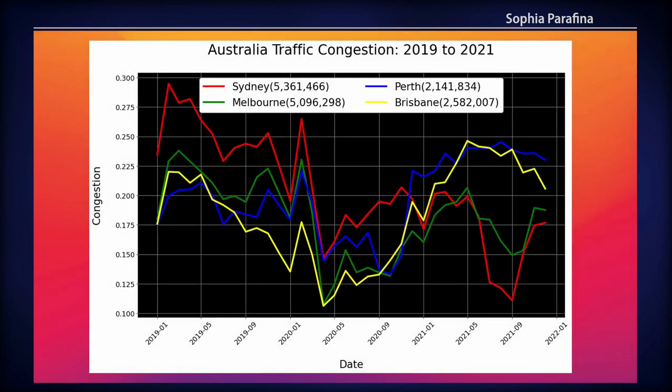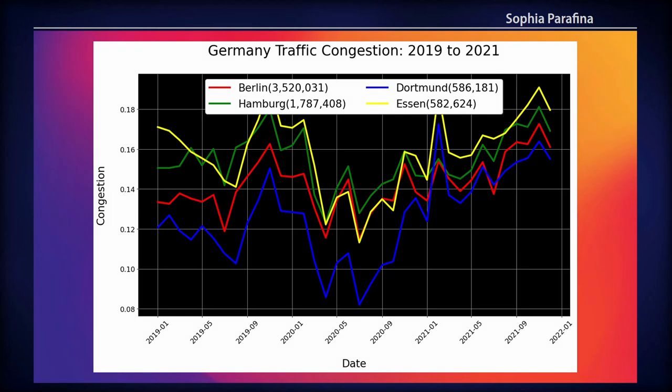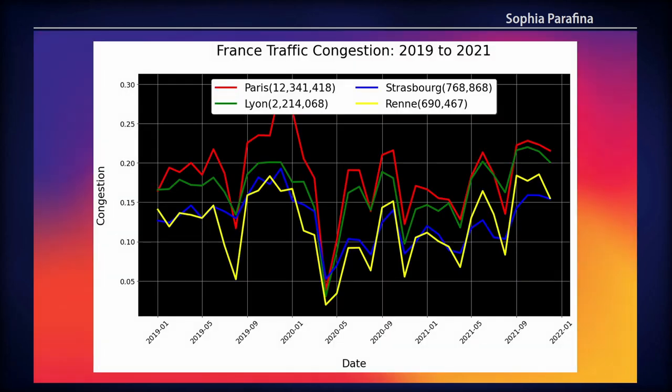Similarly, Australia has a large drop. But then what's most interesting is that both Perth and Brisbane have an increase in traffic flow and actually have a higher traffic flow than they started with. So it's interesting to see what caused those types of effects on traffic. UK, similarly, follows mostly the Western pattern — you see a massive drop and then basically all the cities tracked in the same direction.